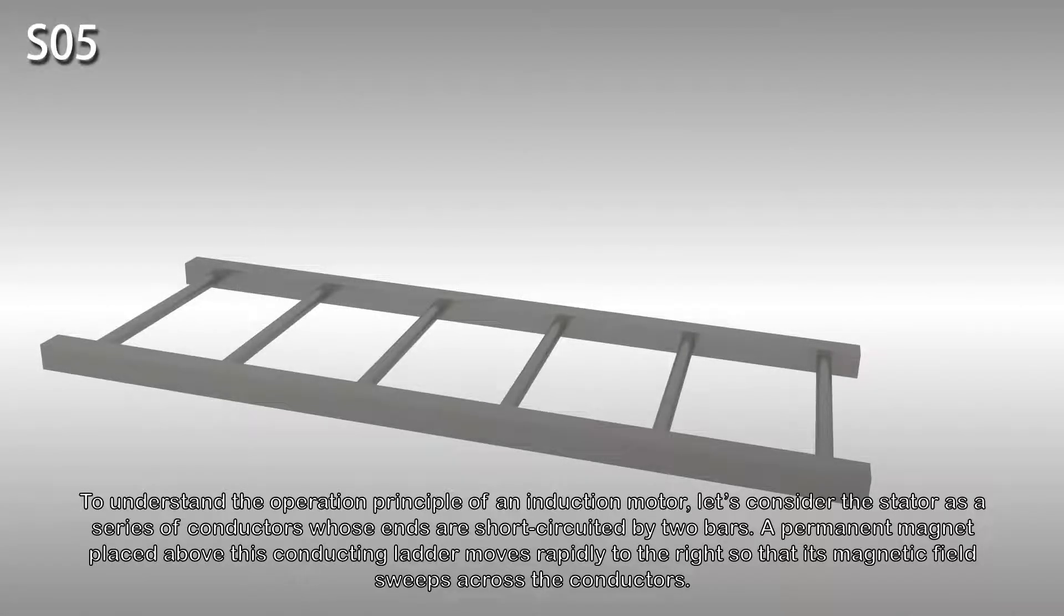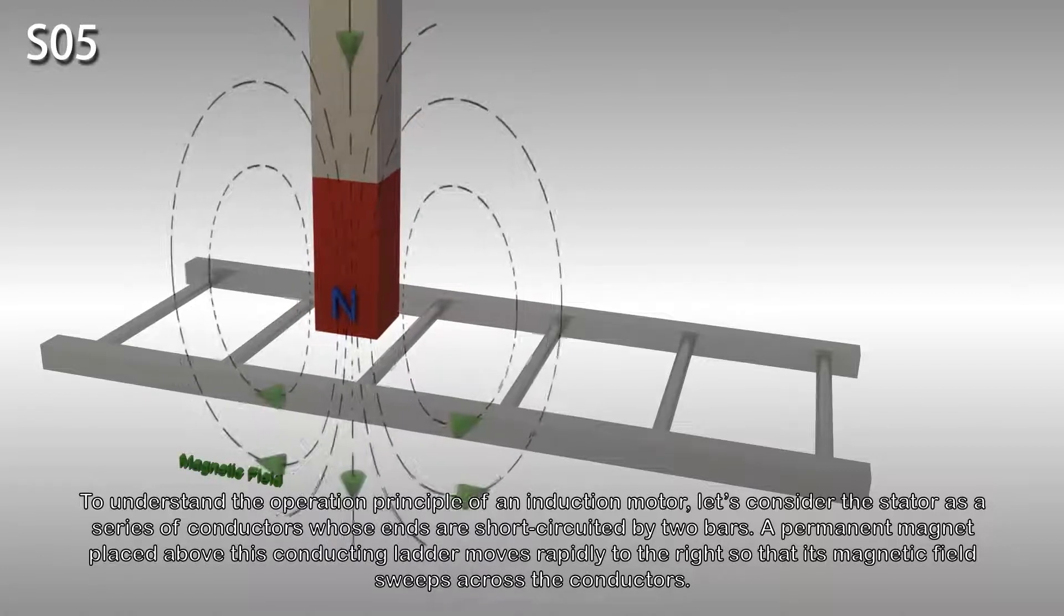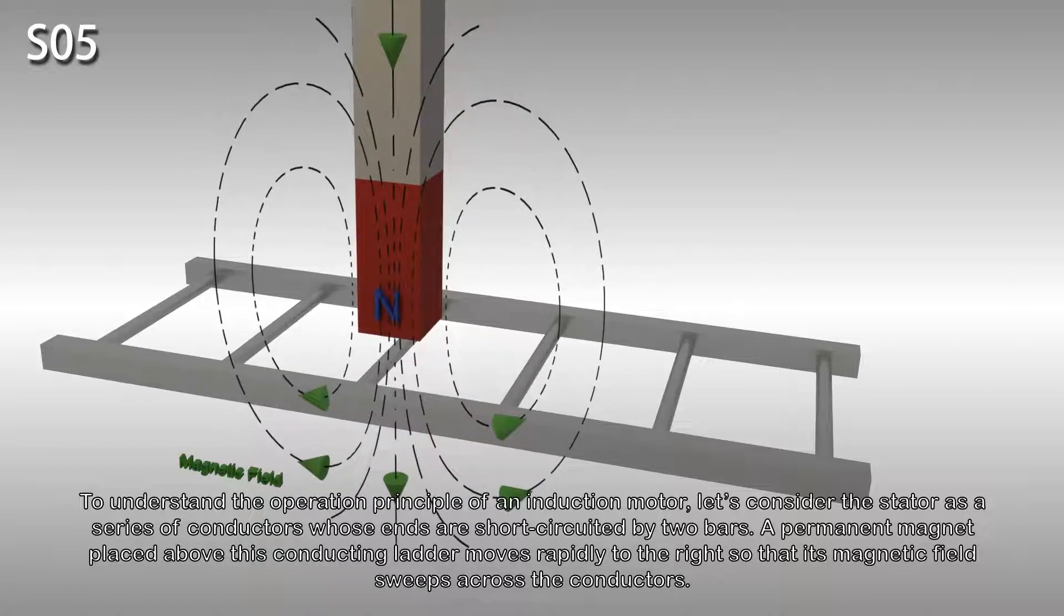To understand the operation principle of an induction motor, let's consider the stator as a series of conductors whose ends are short-circuited by two bars. A permanent magnet placed above this conducting ladder moves rapidly to the right so that its magnetic field sweeps across the conductors.